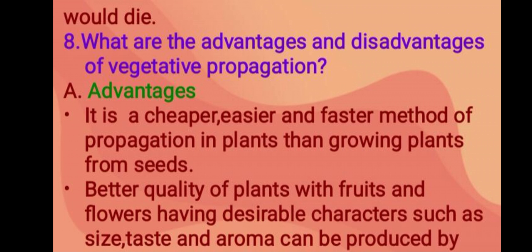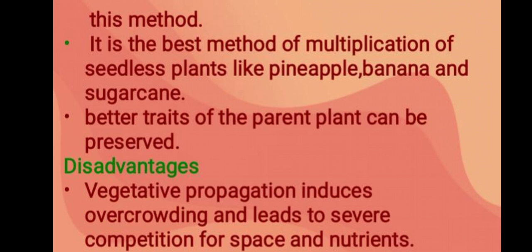Next question: what are the advantages and disadvantages of vegetative propagation? Advantages: number one, it is a cheaper, easier, and faster method of propagation in plants than growing plants from seeds. Second, better quality plants with fruits and flowers having desirable characters such as size, taste, and aroma can be produced. Third, it is the best method of multiplication of seedless plants like pineapple, banana, and sugarcane.